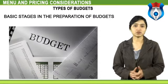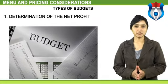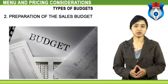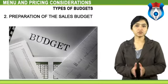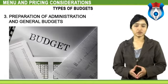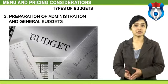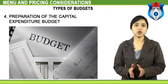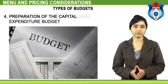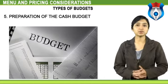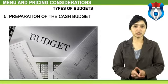Budgeting may be seen as being in six stages: determination of the net profit required in relation to capital invested and risk involved; preparation of the sales budget, which determines the volume of sales necessary to achieve the desired net profit or subsidy; preparation of administration and general budgets covering head office expenses, advertising, rates, insurance, etc.; preparation of the capital expenditure budget for items such as new kitchen equipment, restaurant and bar furniture; preparation of the cash budget, which predetermines cash inflows, outflows, and the resulting cash balance at particular points during the period.